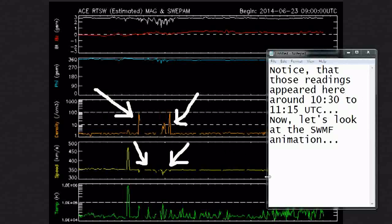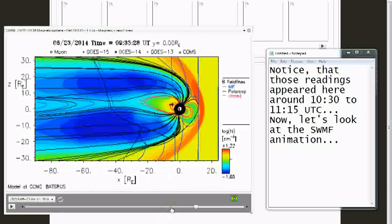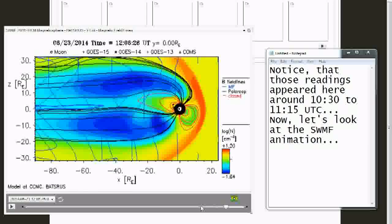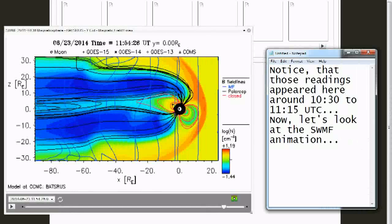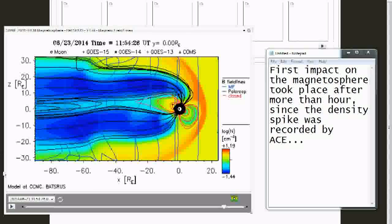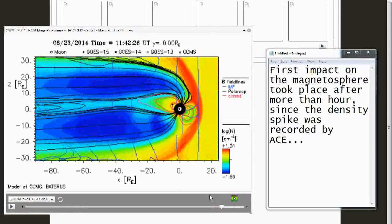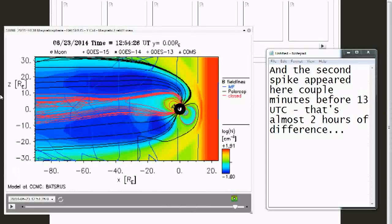Now let's look at the SWMF animation. First impact on the magnetosphere took place after more than hours since the density spike was recorded by ACE. And the second spike appeared here couple minutes before 13 UTC. That's almost two hours of difference.